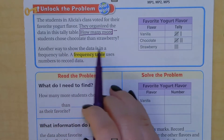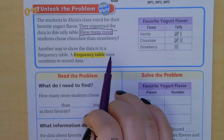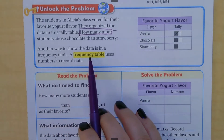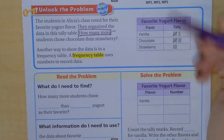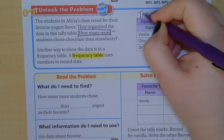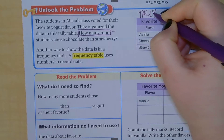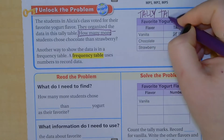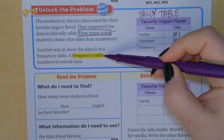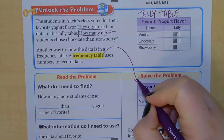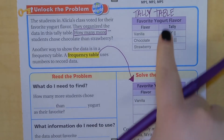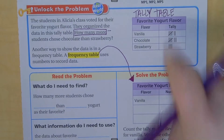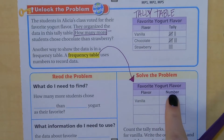Another way to show the data is in a frequency table. A frequency table uses numbers to record data — it's highlighted in yellow, so you know that's a vocab word. Hopefully you've already torn out your vocab cards from the beginning of chapter two and put them into a Ziploc bag. So this is a tally table, and what we're about to make is a frequency table. The difference between a tally table and a frequency table is that a tally table uses tally marks, while a frequency table uses numbers.